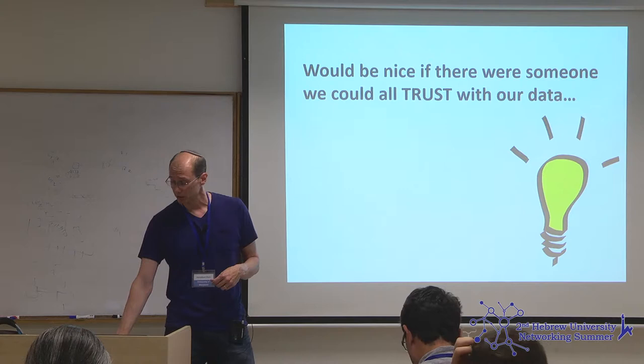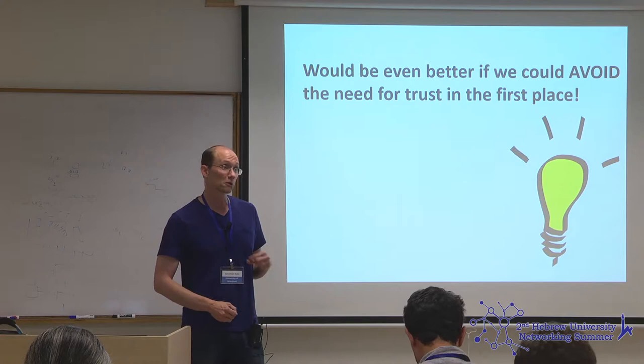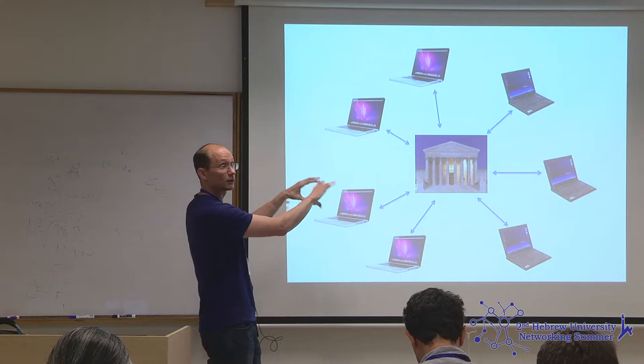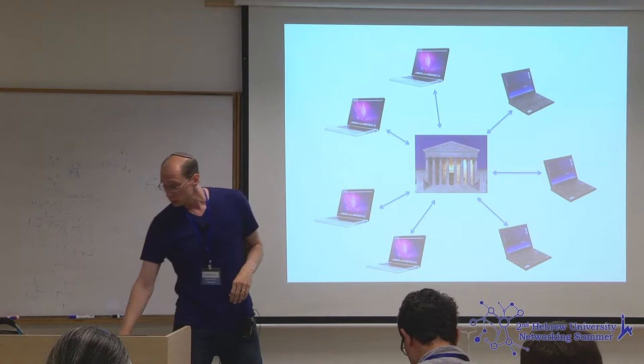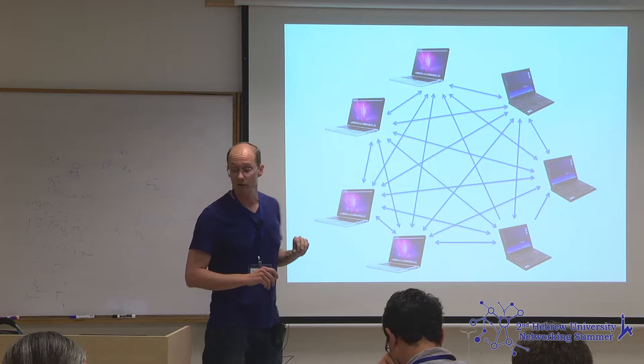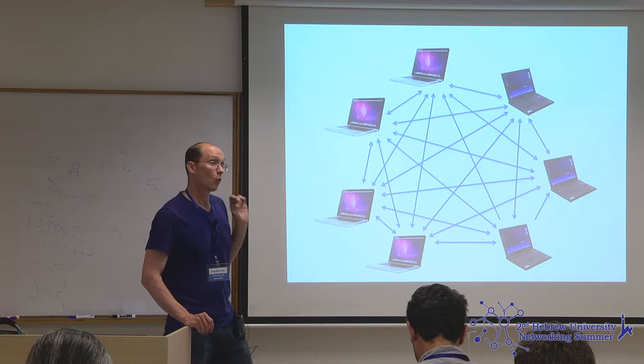It would be nice if there was somebody we could trust with our data, but actually it's even nicer from a cryptographic point of view if we can avoid the need for the trusted party in the first place. What that would allow us to do is replace that centralized picture — all computers sending data to a central location for computation — with a distributed protocol that doesn't involve any external entity at all, but which achieves the same functionality as having a trusted party.